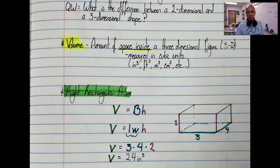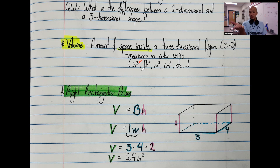That little three — that exponent — means that we're measuring all three dimensions: one, two, three.